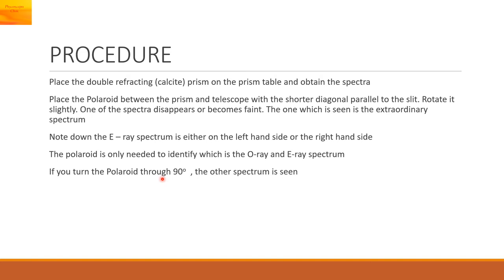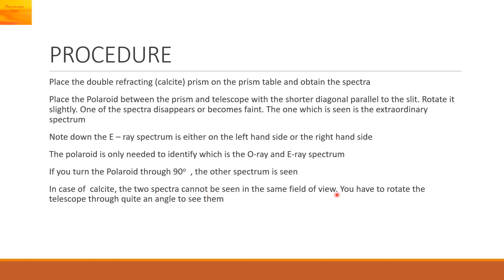If you turn the polaroid through 90 degrees, the other spectrum is seen. In case of calcite, the two spectra cannot be seen in the same field of view. You will have to rotate the telescope through quite an angle to see them.